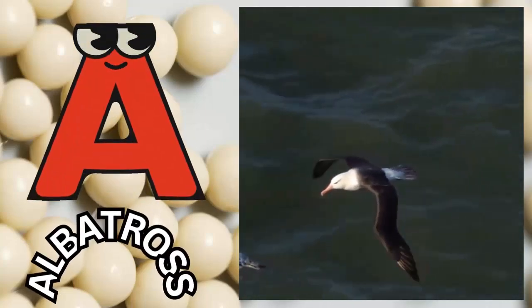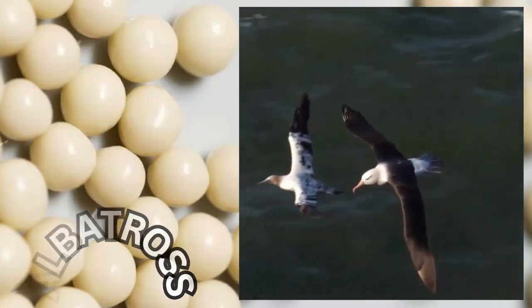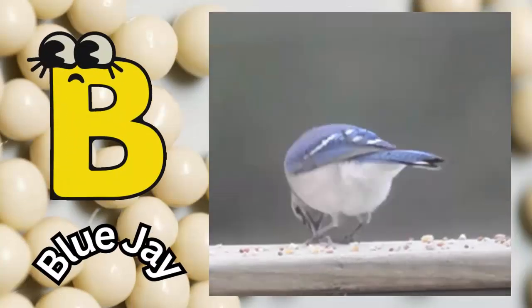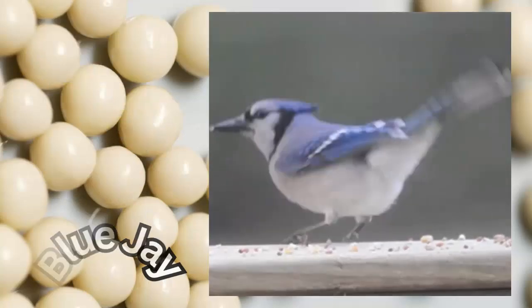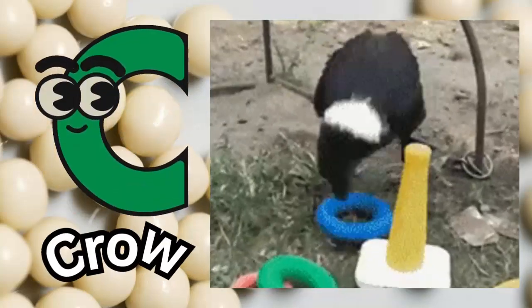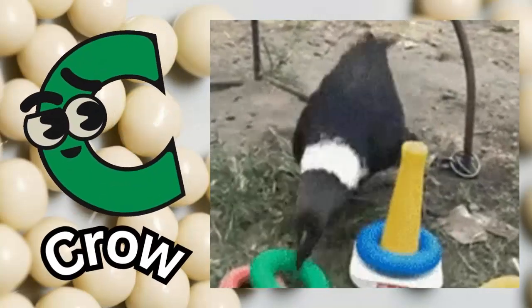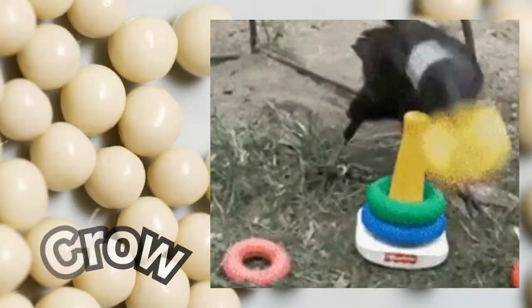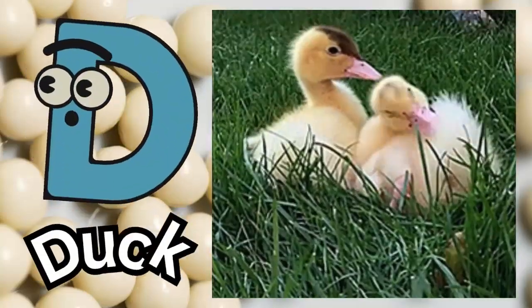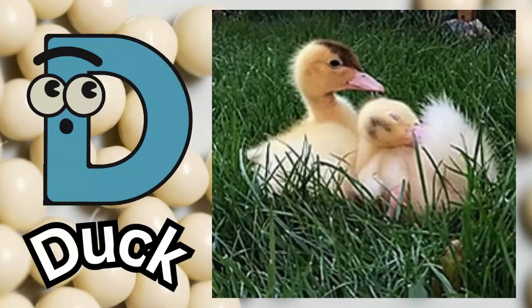A - A for Albatross. B - B for Blue Jay. C - C for Crow. D - D for Duck.